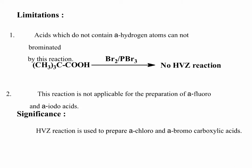Limitations of HVZ reaction: acids which do not contain α-hydrogen atoms cannot be brominated by this reaction. For example, trimethylacetic acid does not undergo HVZ reaction because it contains no α-hydrogen atoms. Also, it is not applicable for the preparation of α-fluoro and α-iodo acids.